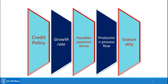The growth rate — how aggressive the company's growth plans are — obviously means higher working capital requirement when growth plans are aggressive. Payables and payment terms, which are more or less covered as part of credit policy, refers to the terms on which the company pays its suppliers; different terms with different suppliers define the working capital need. Production process flow — how long it takes, what all is involved, what working capital is required, and how long it takes for raw material to be converted to final product.